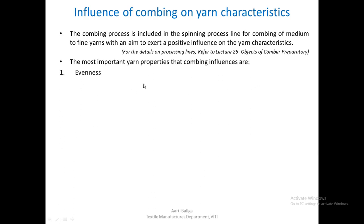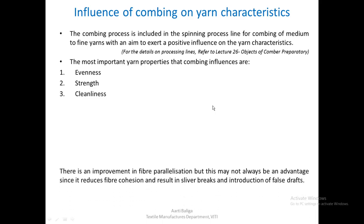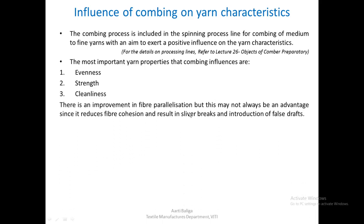The most important yarn properties that combing influences are evenness, strength, and cleanliness. There is an improvement in fiber parallelization also, but this may not always be an advantage since it reduces fiber cohesion and results in sliver breaks and introduction of false drafts. So although there is an improvement in these three properties, fiber parallelization might not always be advantageous from the point of view of breakages and false drafts.